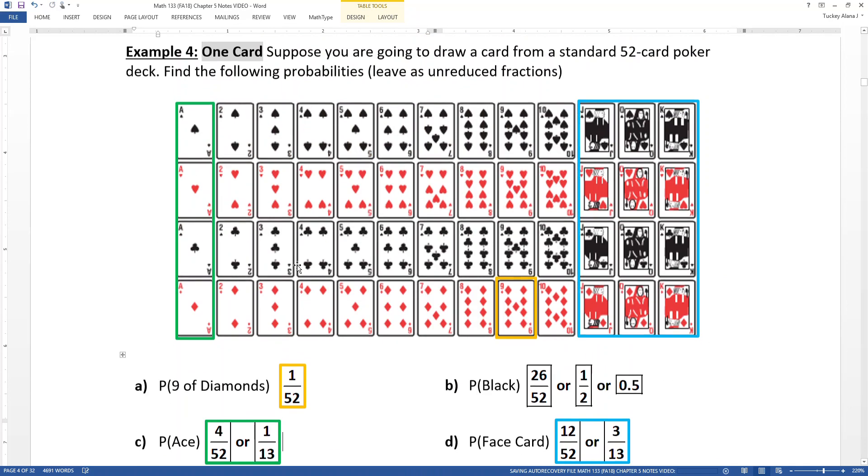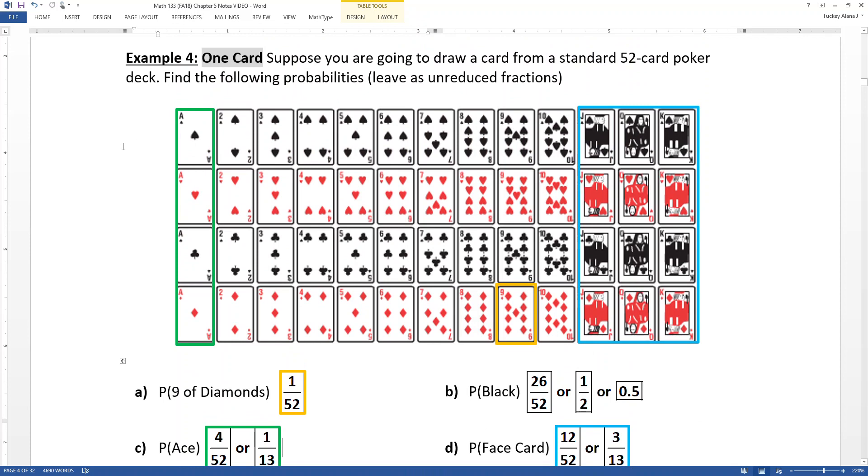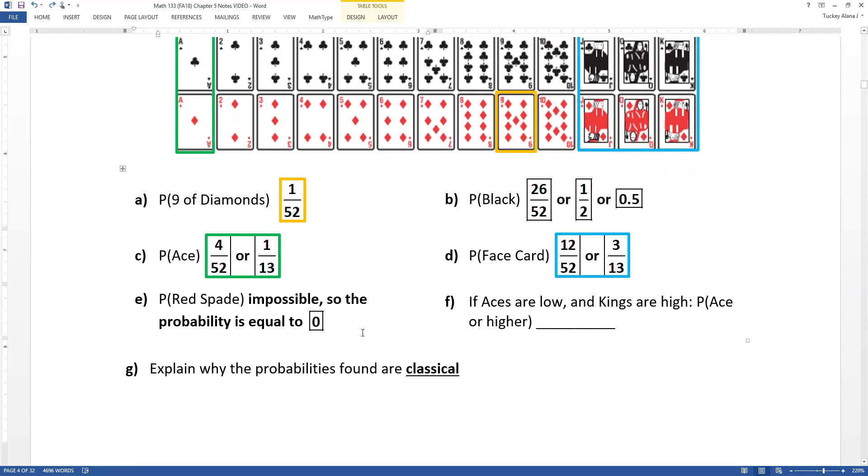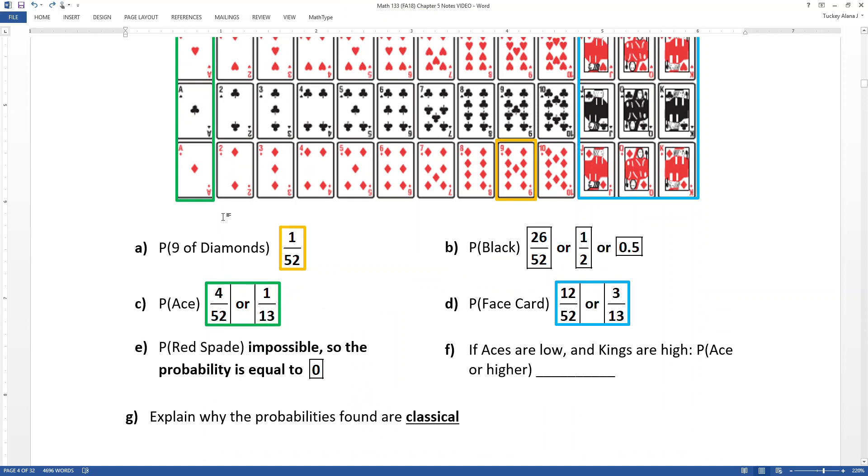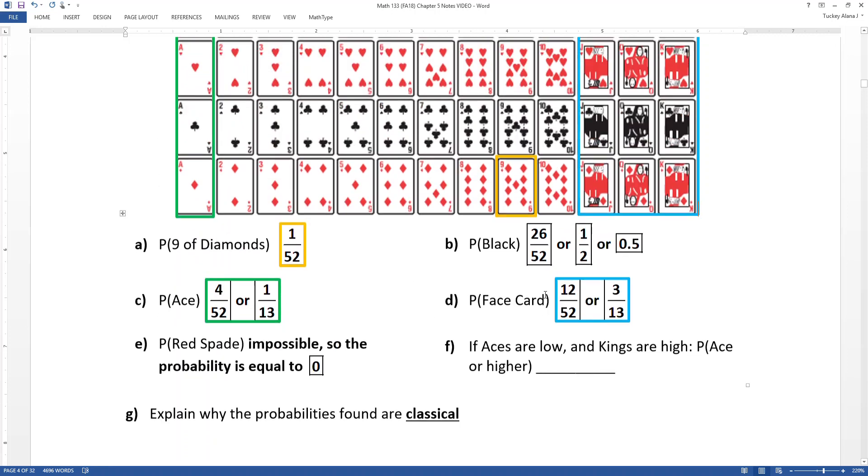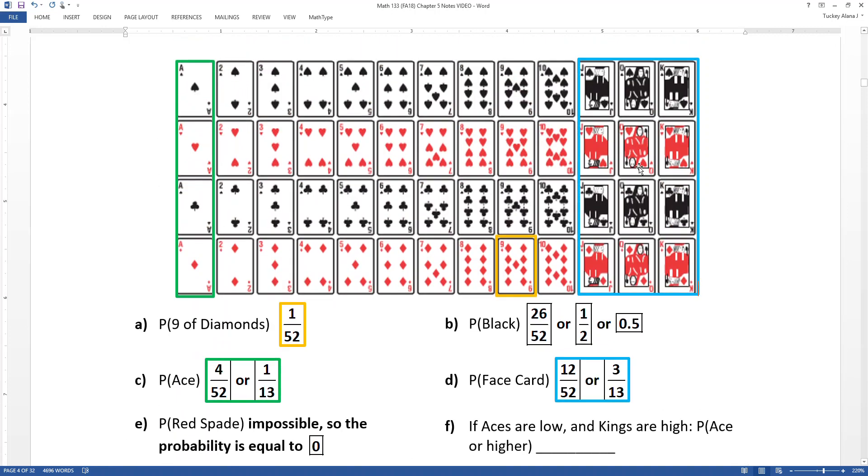Now a red spade. Well, spades are the top row. Those are spades. And you can see that they're black. So that would mean that it's impossible to find a red spade. So that would mean the probability is equal to zero. So just for the record, impossible doesn't mean that there isn't a probability. There is. It's zero. Sometimes students get confused and think if it's impossible, then there isn't a probability for it. And that is not the case. There is. It's zero.